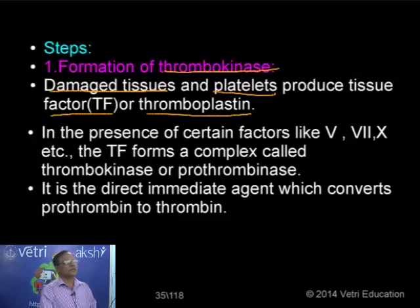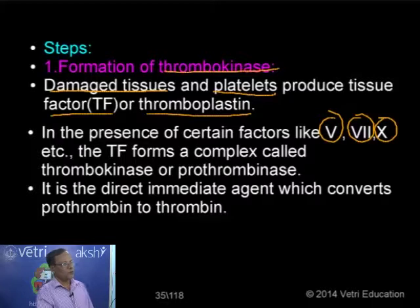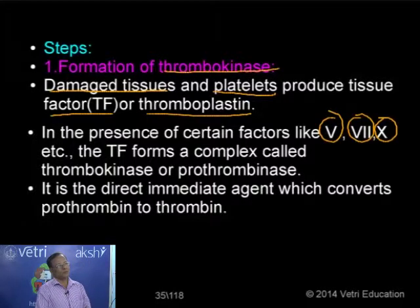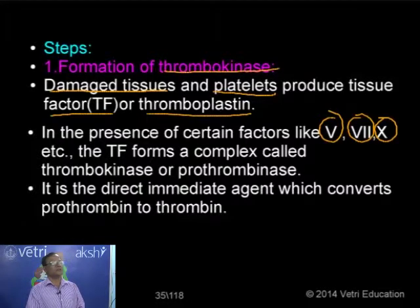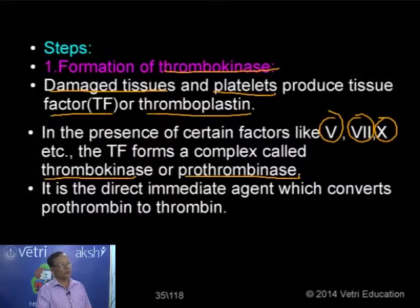Once thromboplastin is formed, in the presence of certain other factors circulating in the blood — factor 5 (Labile factor), factor 7 (proconvertin), and factor 10 (Stuart factor) — the tissue factor forms a complex. Reactions take place between these factors and the tissue factor thromboplastin. As a result, we get a substance called thrombokinase or prothrombinase.